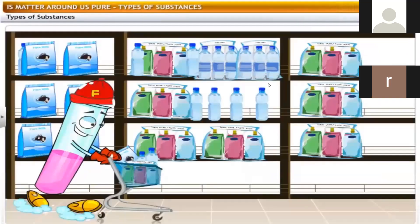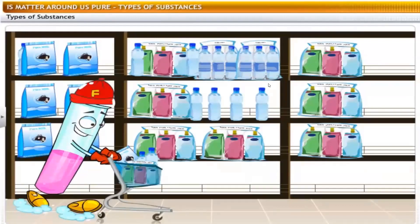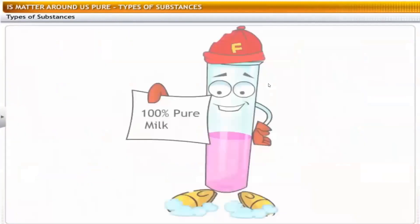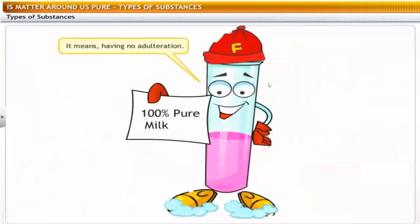You might have observed the word 'pure' written on the packaging of consumables like milk, mineral water, and fruit juice. What does the word 'pure' mean to you? It means having no adulteration. That's right — but for a chemist, none of these substances are pure.